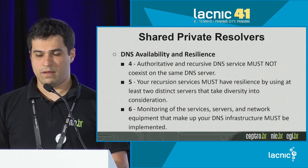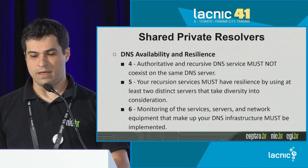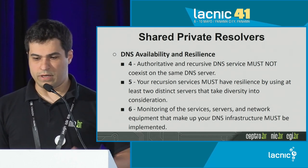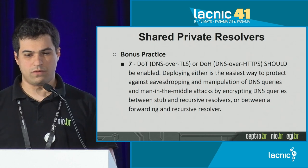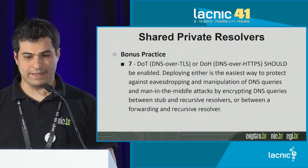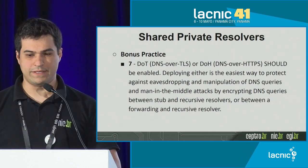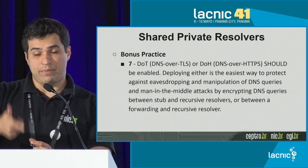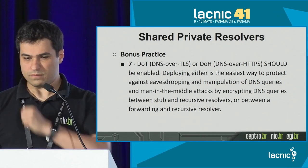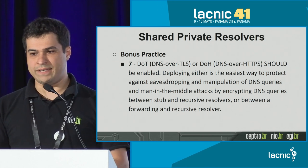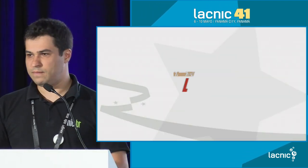Having more than one recursive DNS server means if one fails, we have a backup. Monitoring of the services is also important—if there are any issues, one can correct the DNS. Finally, there is a bonus practice: DNS over TLS or DNS over HTTPS, which should be enabled. This is easy to deploy and protects against eavesdropping and manipulation of DNS queries. The two messages I wish to leave here: sign MANRS and sign Kindness. Thank you very much.